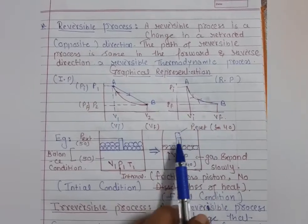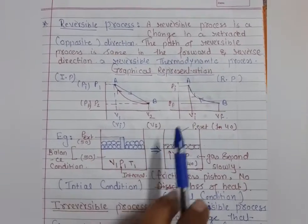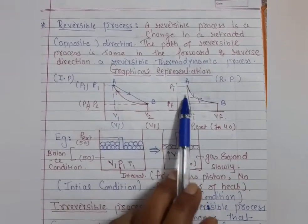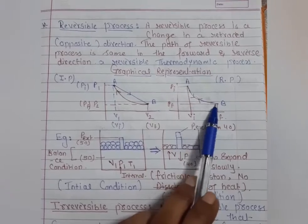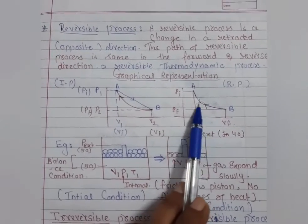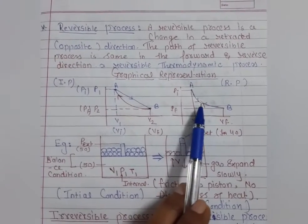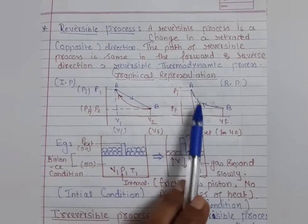This process from A to B can also be reverted — we can change this condition from B back to A. See this arrow sign; with the help of this arrow sign, you can understand the reversible process.